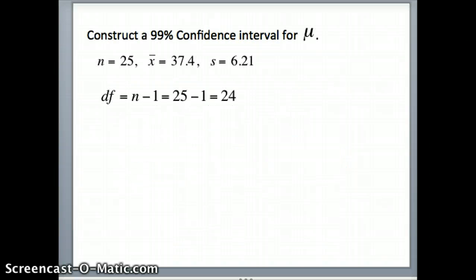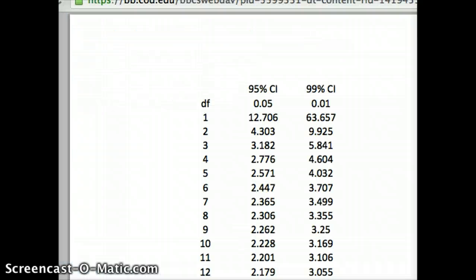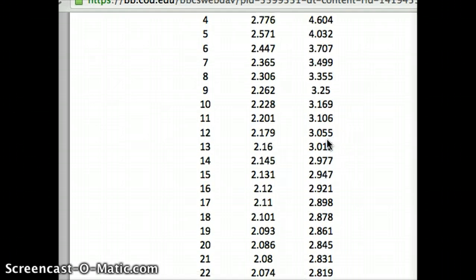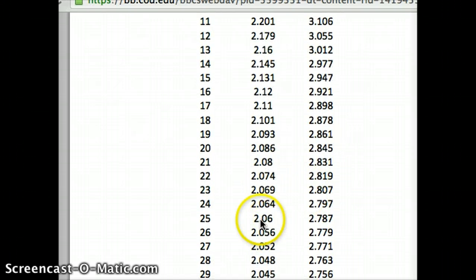We need our degrees of freedom here. So our degrees of freedom here are going to be n minus 1. 25 minus 1 is 24 degrees of freedom. And we want a 99% confidence level. So let's go to the table and see what the t value will be for 24 degrees of freedom with a 99% confidence level. 99% is the last column. So we will take degrees of freedom to 24. And our last column, you'll see here, is 2.797.